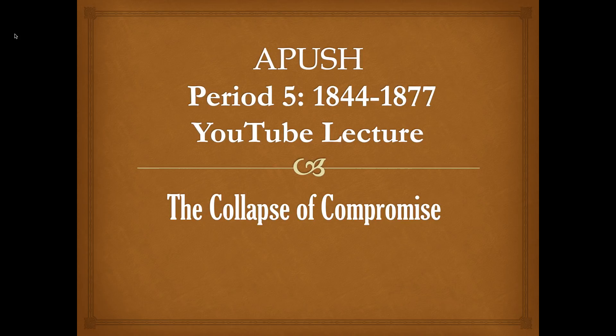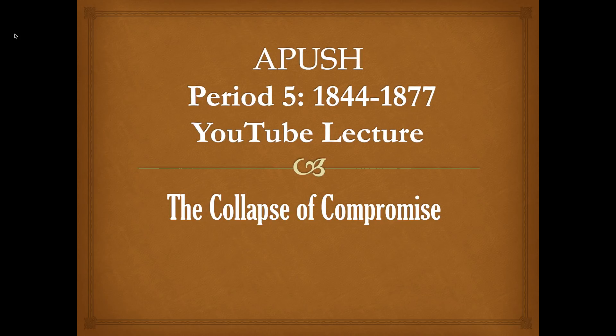We're in period 5, 1844 to 1877. We're going to be looking at basically the 1850s and the collapse of compromise — the subject of slavery. Up until now, the federal government has seemed content to compromise over this issue between the North and the South, always placating to the Southern ideology when it comes to their peculiar institution. But there's going to come a moment where they can't compromise anymore. Something has got to happen in between the compromising and the Civil War, and that's the decade of the 1850s.